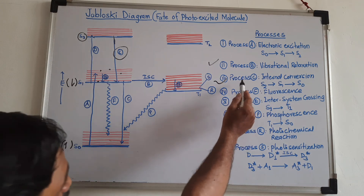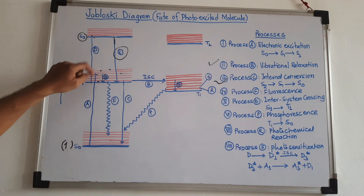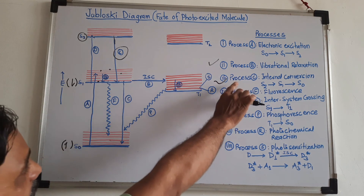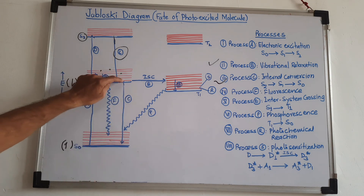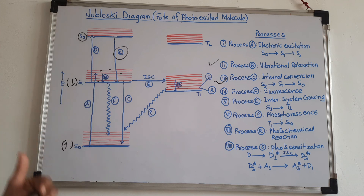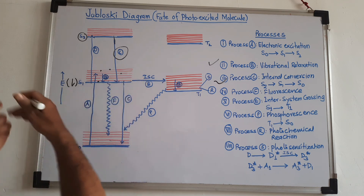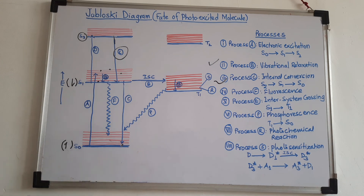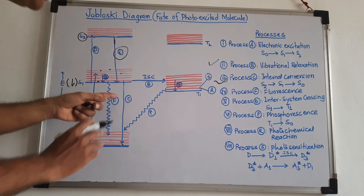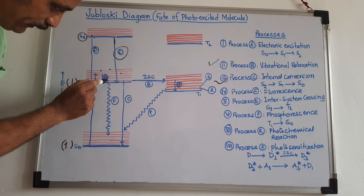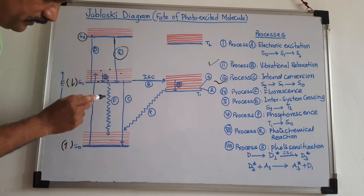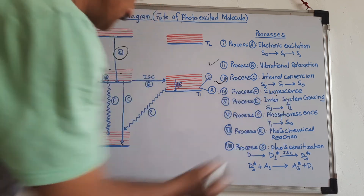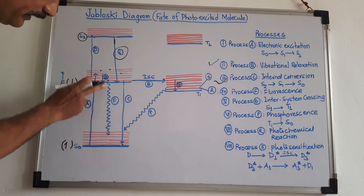So I have explained process C (internal conversion) and process B (vibrational relaxation). Now from S1, the molecule may drop down to the ground state electronic energy level again via internal conversion. The molecule transfers that energy to another molecule through collision, or in the form of heat, and goes back to its original energy level without any photochemical reaction. Another possibility is that the molecule emits that extra energy in the form of light — this is called fluorescence (process F).